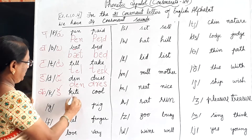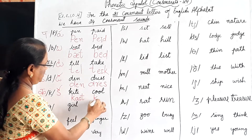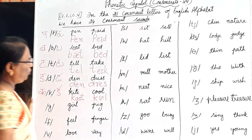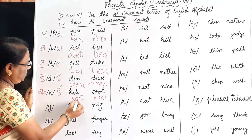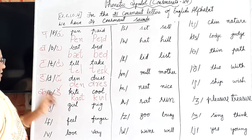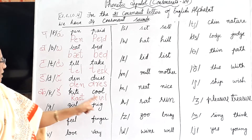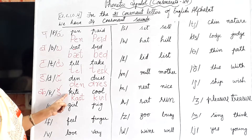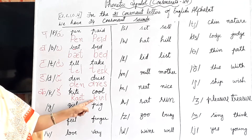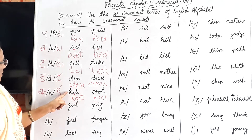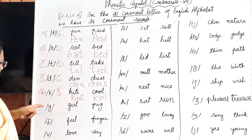K gives the /k/ sound — quite, cool, good. Also note that both K and C give the /k/ sound. Now G stands for the /g/ sound — girl, pig.